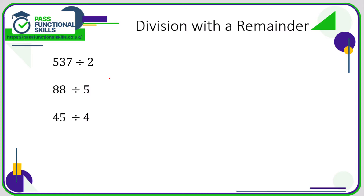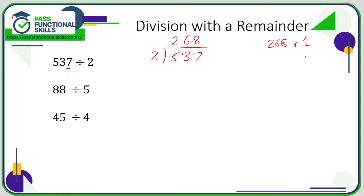Now let's look at division where there is going to be a remainder. 537 cannot be divided by 2 because everything in the two times table is even and this is an odd number, so we know it won't divide exactly. 5 divided by 2 is 2 remainder 1. 13 divided by 2 is 6 remainder 1. 17 divided by 2 is 8 remainder 1. Instead of writing '268 remainder 1', we put in a decimal point and add a zero after it — 537 is the same as 537.0. That remainder of 1 gets parked, and 2s into 10 is 5. So the answer is 268.5.